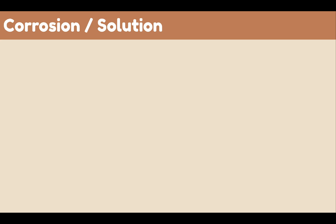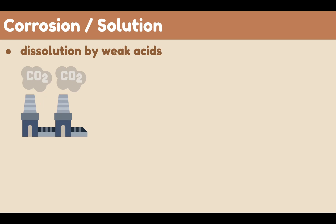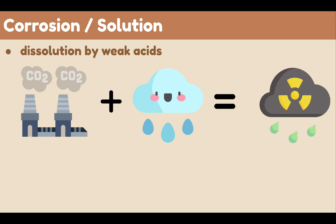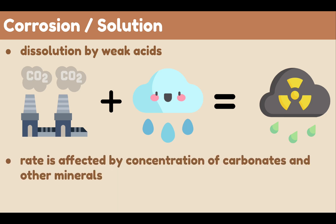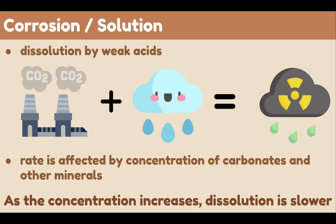Last, under coastal erosion, we have corrosion or solution. This involves dissolution by weak acids such as carbon dioxide in the atmosphere. When carbon dioxide is dissolved in water, it turns into a weak acid called carbonic acid. Several rocks such as limestone are vulnerable to this acidic water and will dissolve into it. The rate of dissolution is affected by the concentration of carbonates and other minerals in the water — as it increases, dissolution becomes slower.